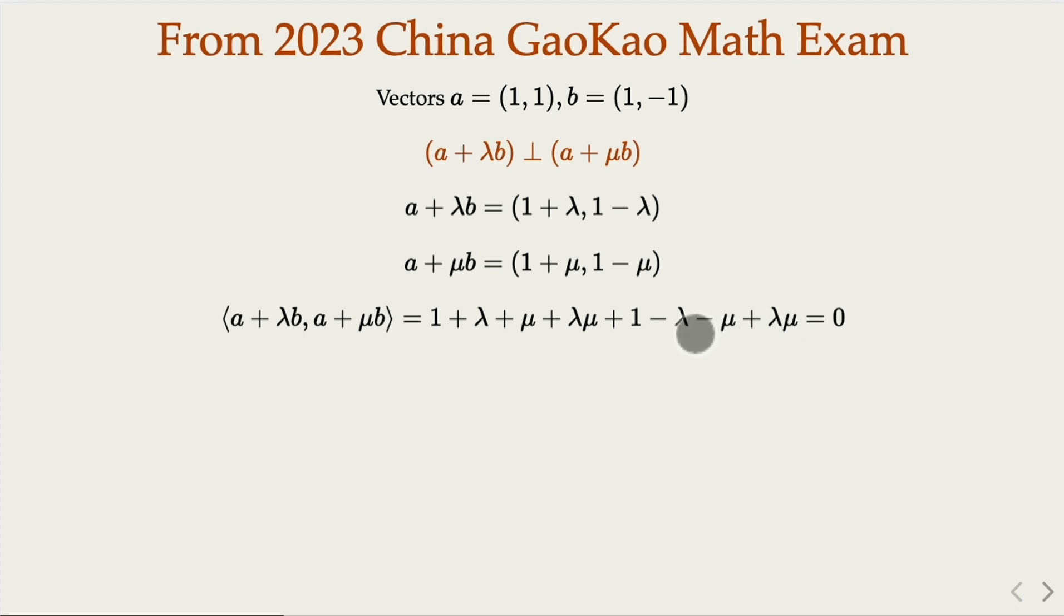And you notice that some terms would cancel. What you get is 2 plus 2 lambda mu, so lambda mu equals negative 1. That's what we get.